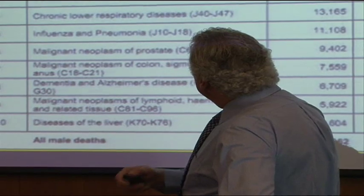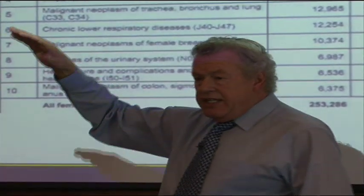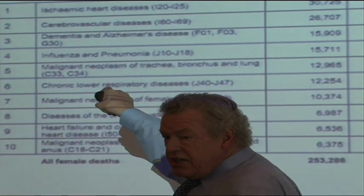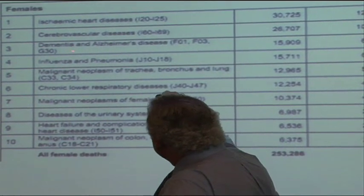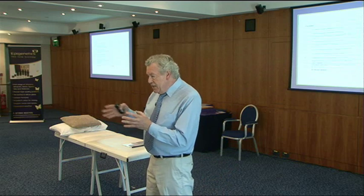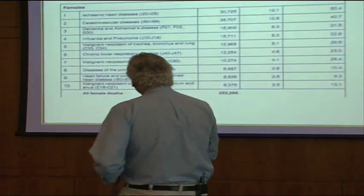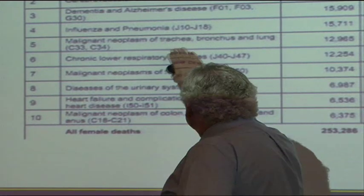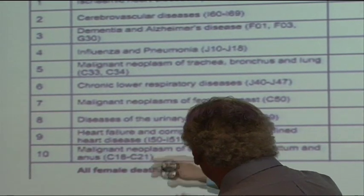With females, ischemic heart disease is again number one, though the total is less than in males — it's less pre-menopausally but tends to catch up post-menopausally. Number two is cerebral vascular disease — strokes and TIAs are much more common in women than in males. Number three is dementia, which is interesting — possibly because women live longer. Number four is influenza pneumonia, then malignant neoplasms of the lung, and instead of prostate we have breast cancer as number seven.